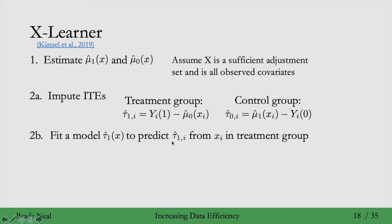So we feed in all of these tau1 i hats, and then we try to predict them from the corresponding covariates X i.